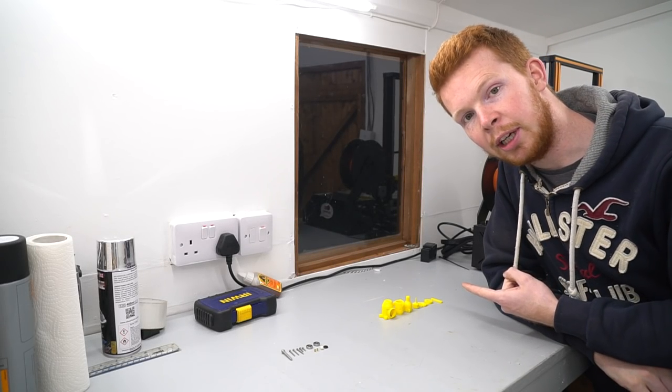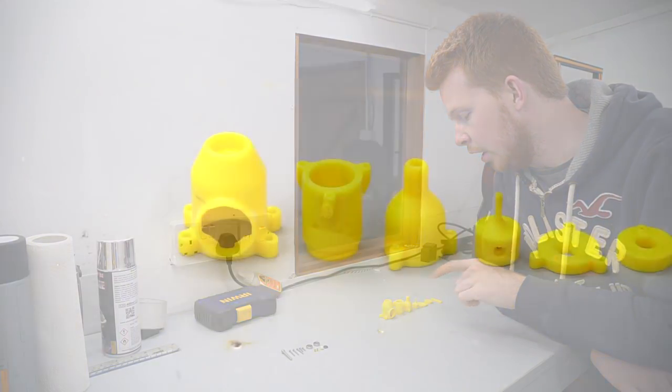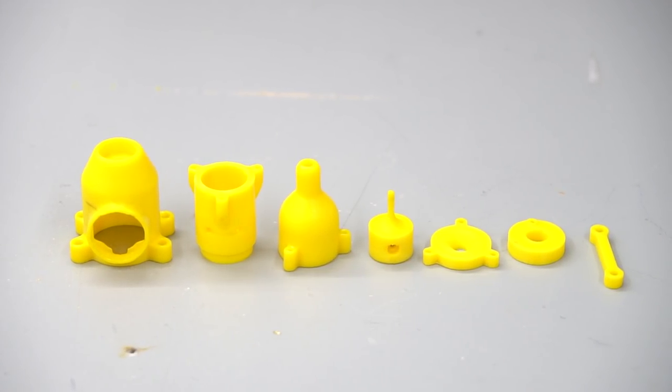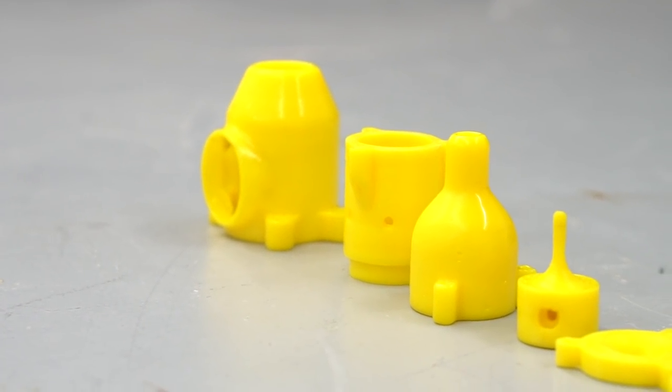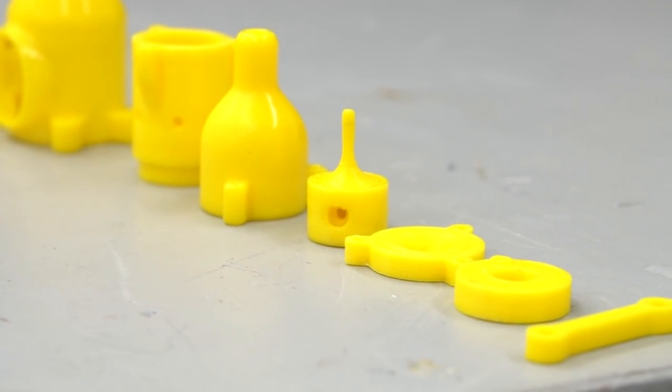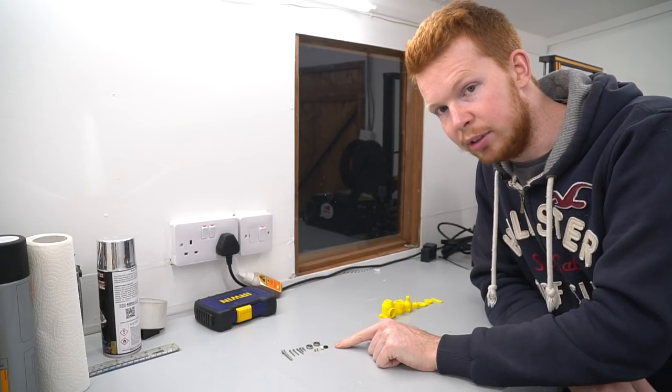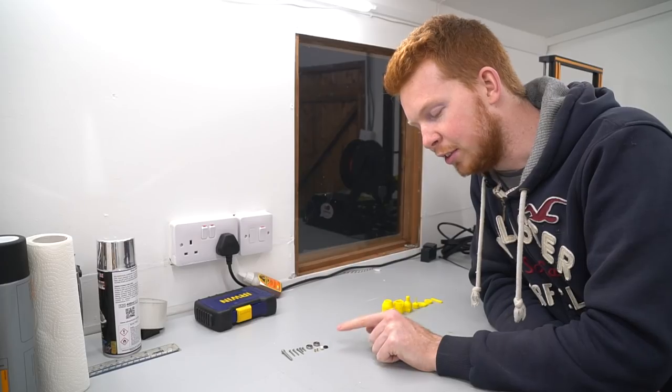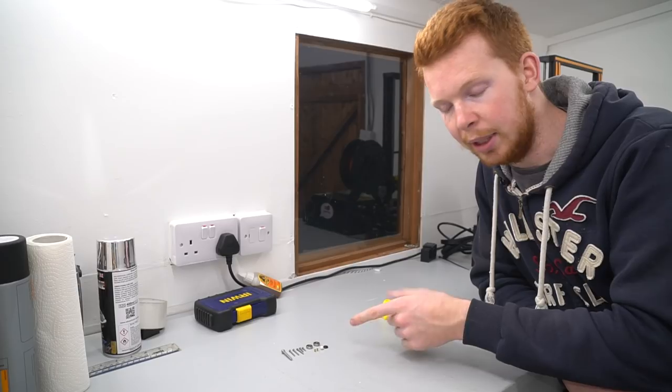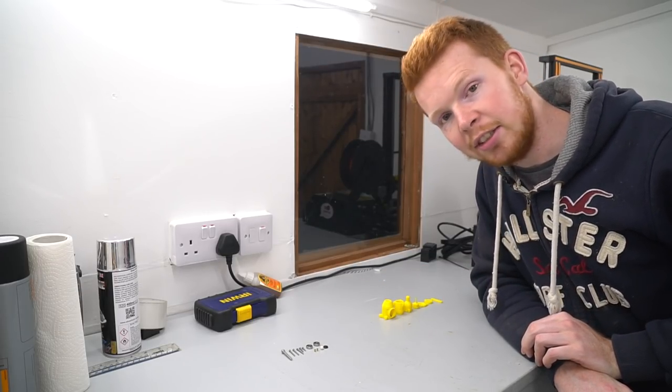I've got all the 3D printer parts here which have been acetone smoothed. Not all of the parts have been smoothed, just the crankcase, the cylinder, the cylinder head valve part, and the piston. The rest of the parts don't really need smoothing so I didn't want to waste too much time on that. I've also got all the hardware which I think should be adequate to put this together. Let's get on with the build and see how well it goes together.